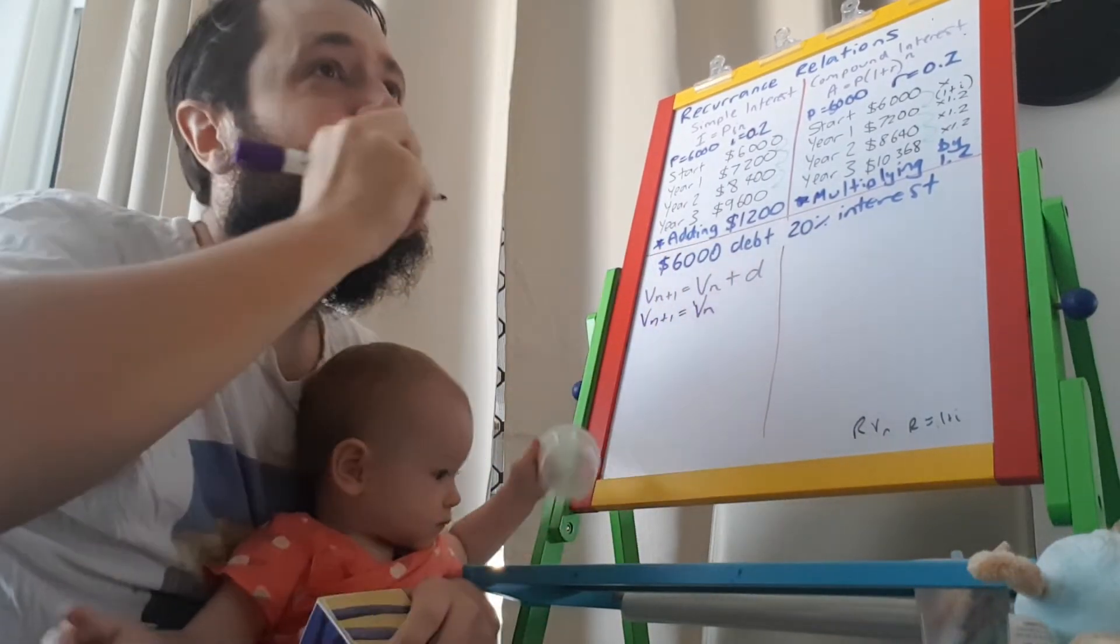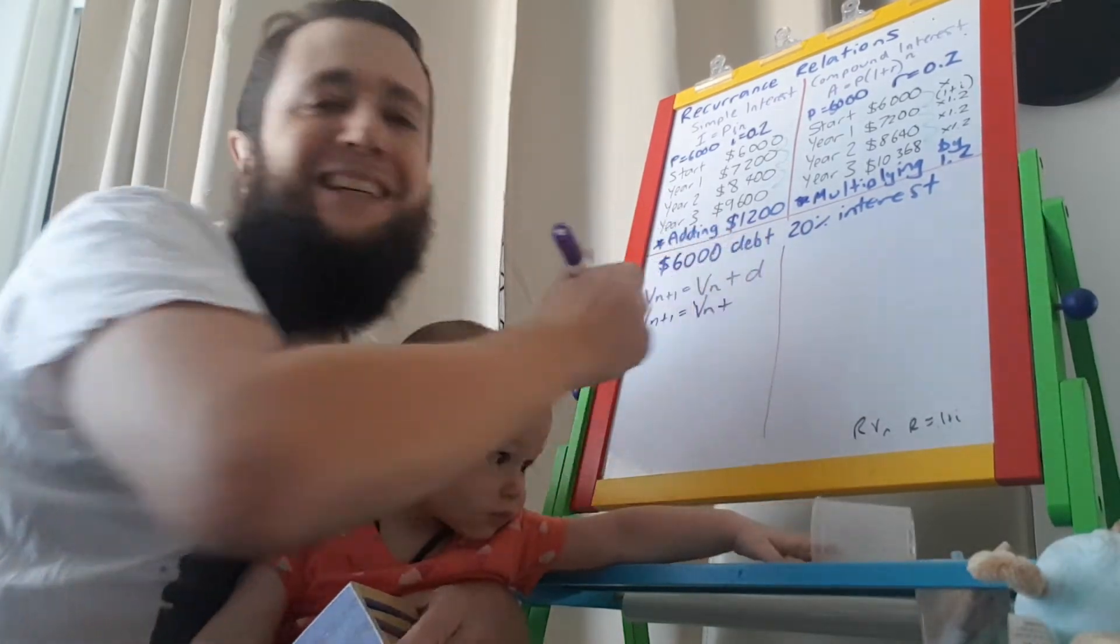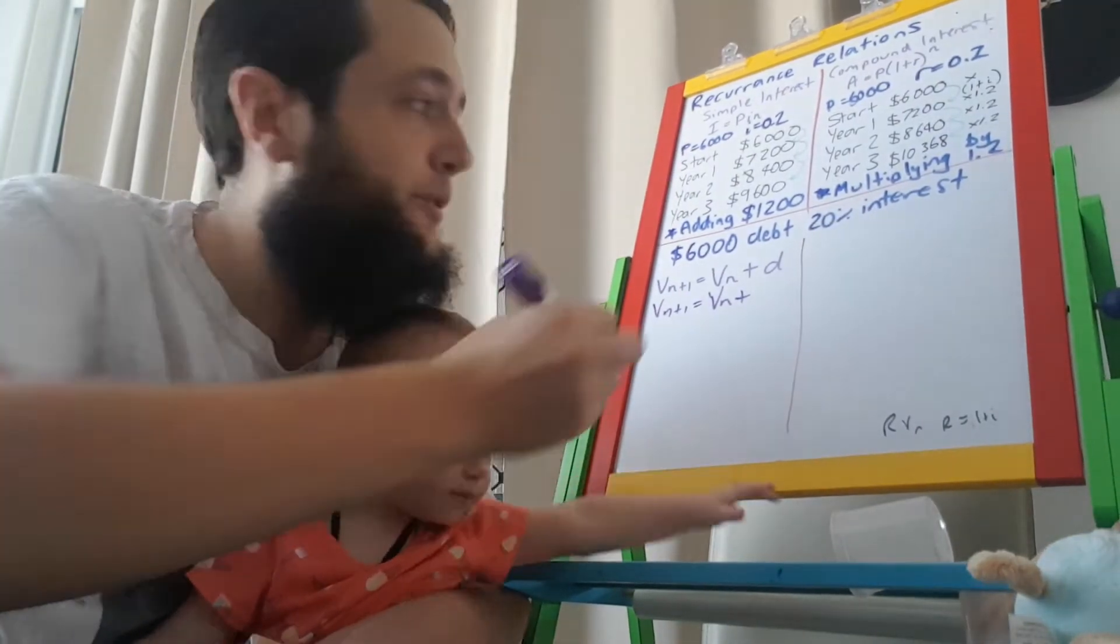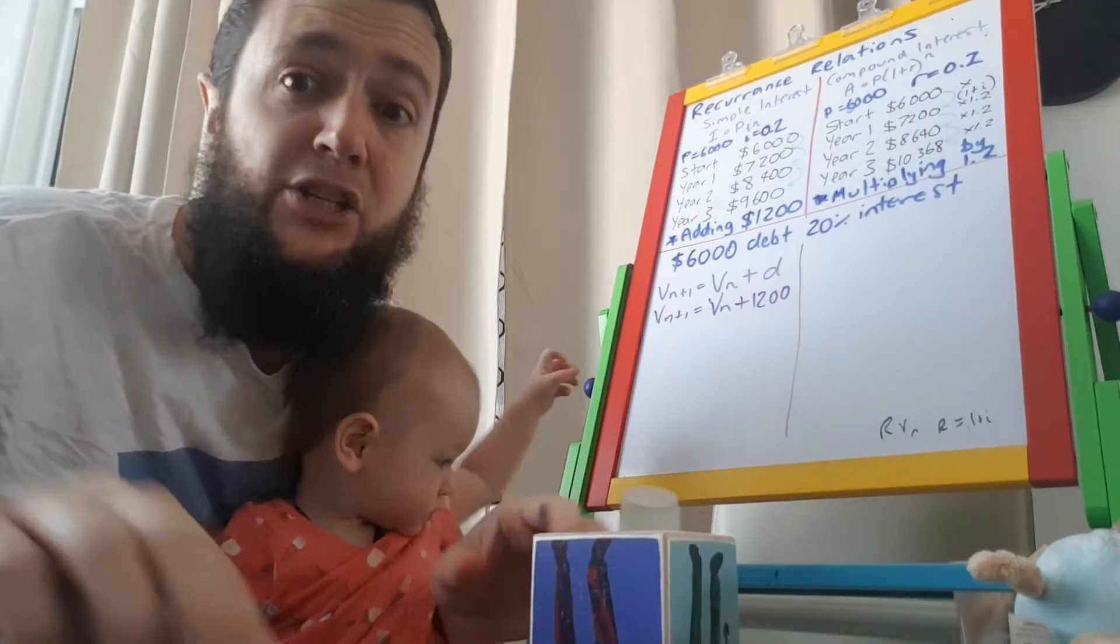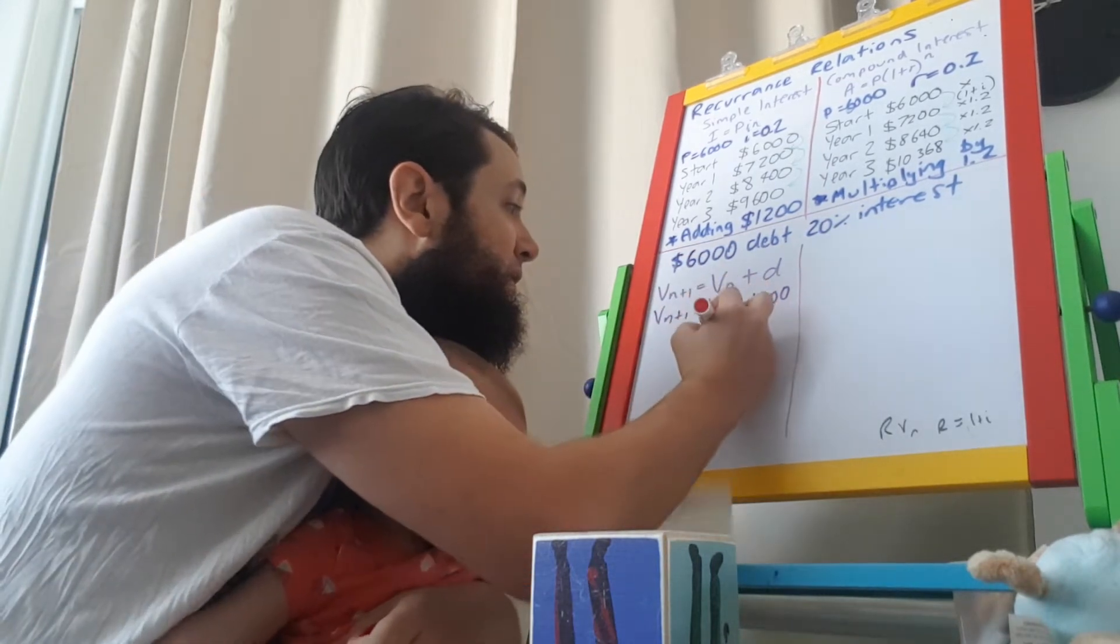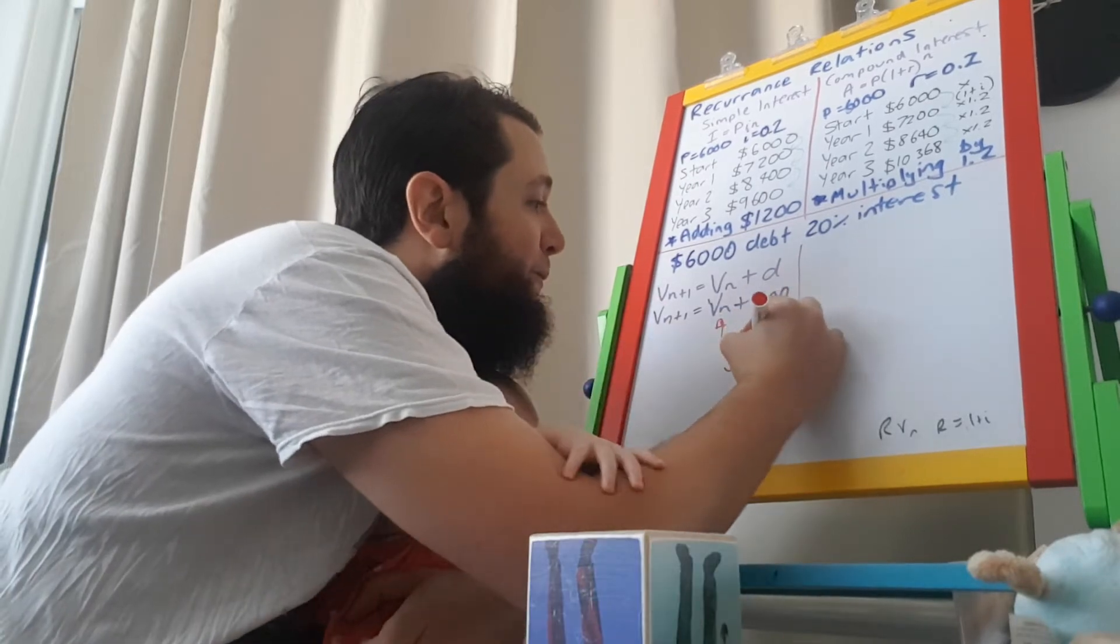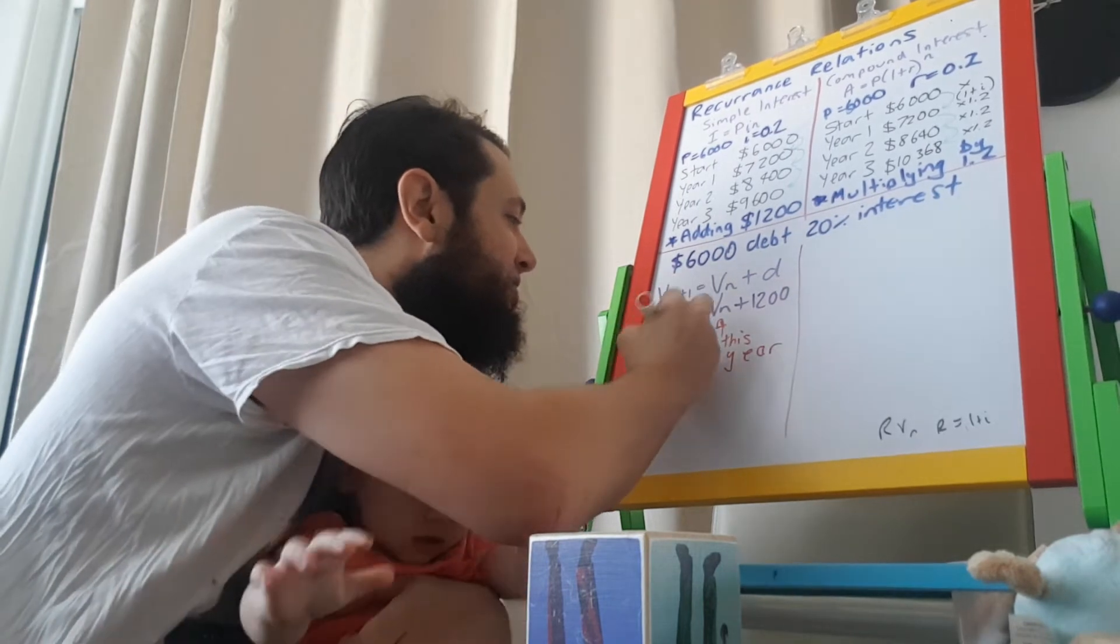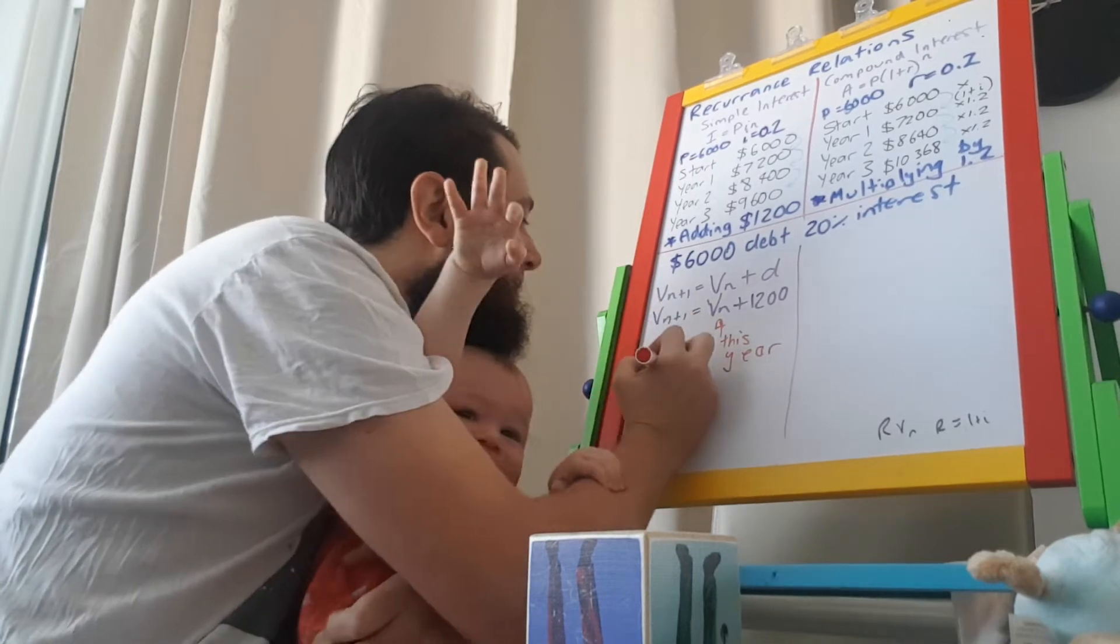Now, we're adding the same amount each year. As we discussed, if you look at the pattern, it's adding 1,200 each year. That is your recurrence relationship. That's it. All it says is, that's the value this year. If I add 1,200 onto it, I get the value next year.